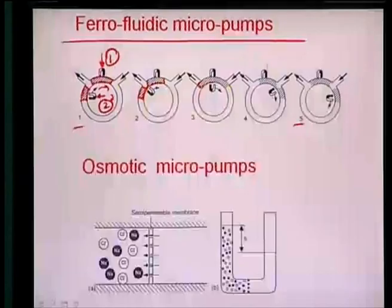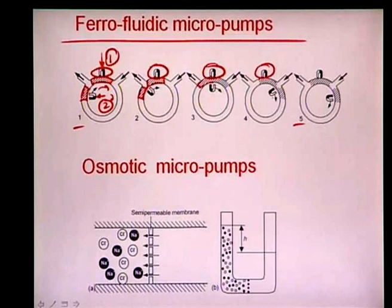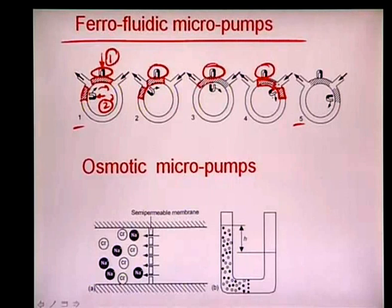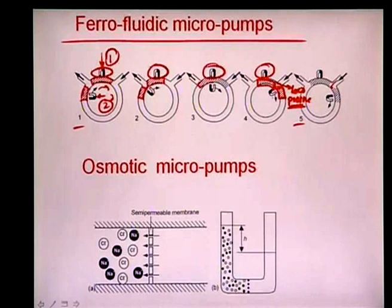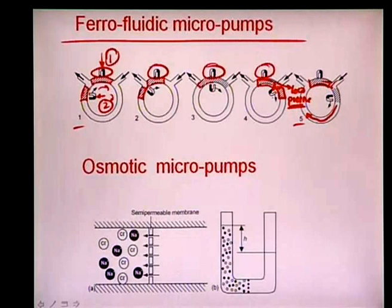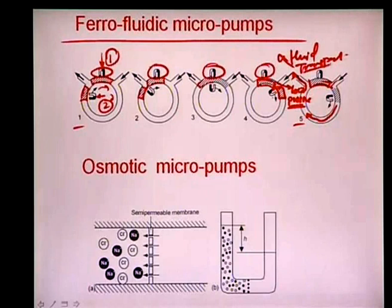As the moving magnet continues and separates from the static plug, it creates a zone of low pressure. Fluid rushes into this low-pressure region, and as the magnet returns it pushes the entire fluid column because the static magnet cannot move forward, driving fluid transport through the second arm.